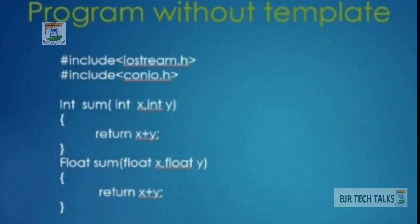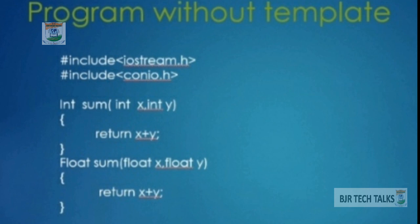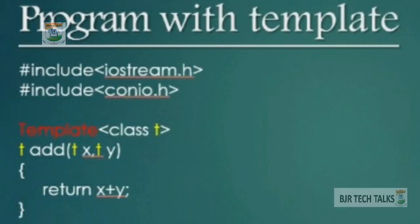Now I am going to explain templates in a program — why we use templates in our program. In C++ we have the function overloading concept. In function overloading, we are defining several functions with the same name by changing the number of arguments and data types. The function name is identical but arguments are different, so this is called function overloading. In function overloading we are using the same function for different purposes, so the program size is never reduced.